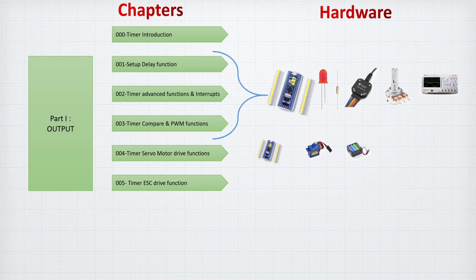Then we complete this output whole big chapter by creating an ESC drive function. The ESC is the electronic speed control. For this video, we will need to have the STM32F1, a brushless motor, and a small electronic speed controller.